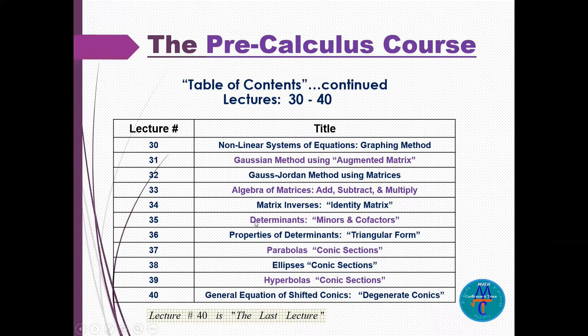If you need to find something about determinants, minors and cofactors, this is lecture number 35. And the last lecture will be number 40, general equation of shifted conics. Also degenerate conics are mentioned there.